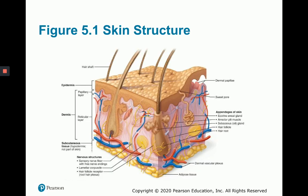In this basic figure of skin structure, you can see that the epidermis, which is stratified squamous epithelium, is superficial to the dermis, and the dermis is much thicker than the epidermis. Below the skin is a layer of subcutaneous tissue made up of fat. Also notice that a lot of the structures in skin, including different nervous structures and appendages of the skin, are found mainly within the dermis.